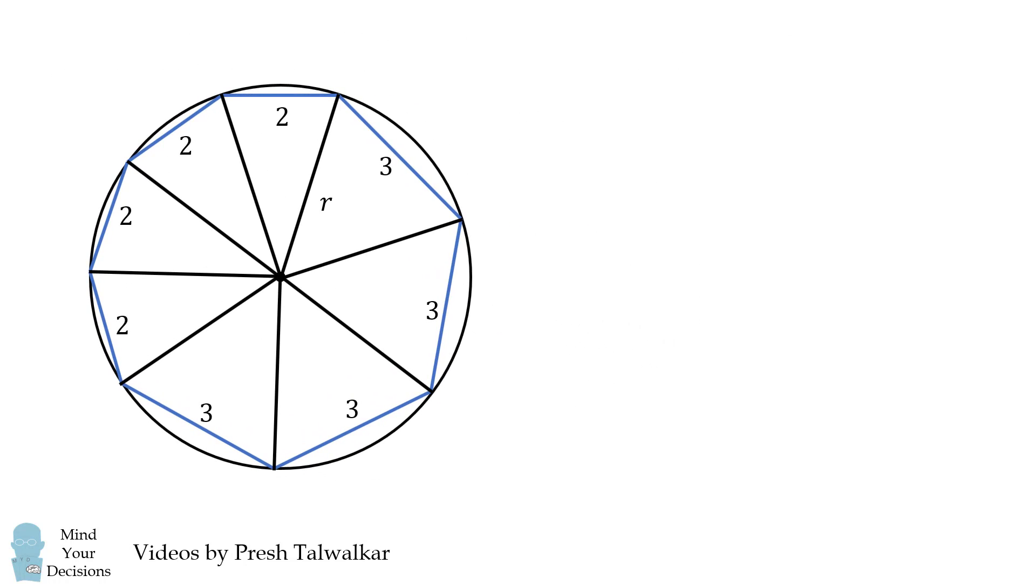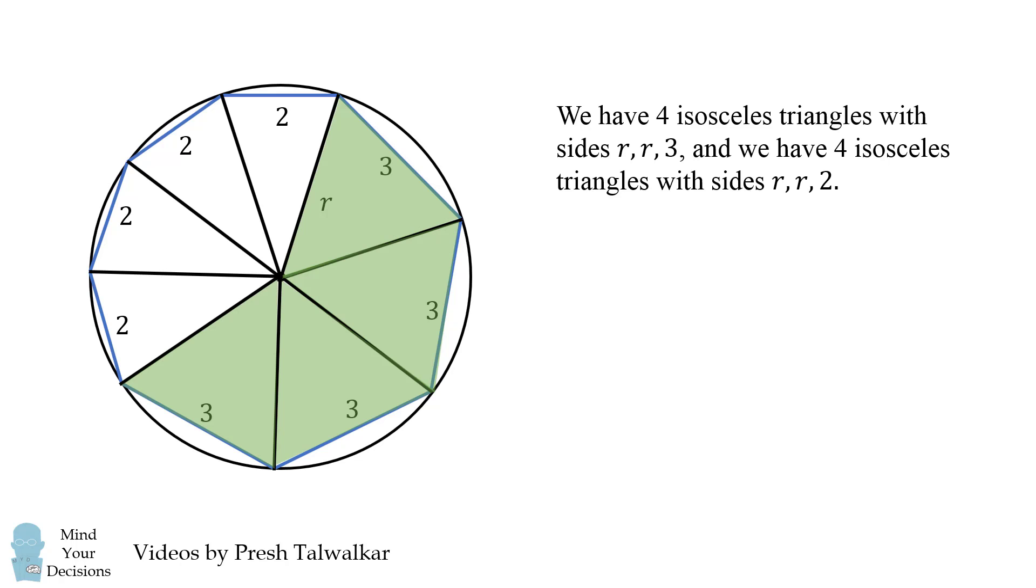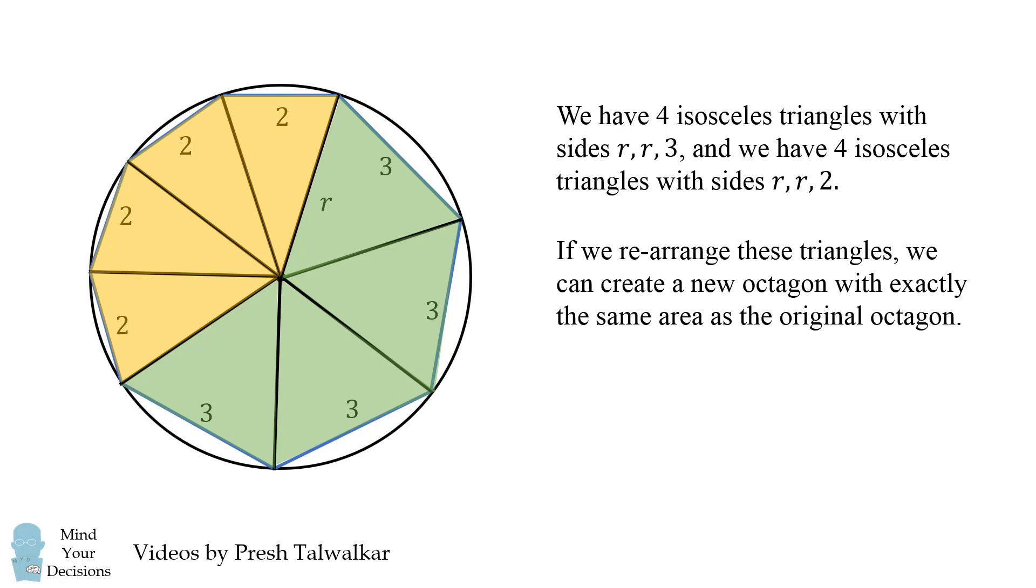So we now have a shape that consists of four isosceles triangles with side lengths r, r, and 3, and four isosceles triangles with side lengths r, r, and 2. The insight is that we can rearrange these triangles to create a new octagon with exactly the same area as the original octagon. So how can we do that?